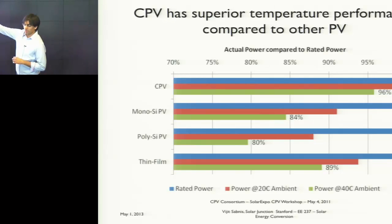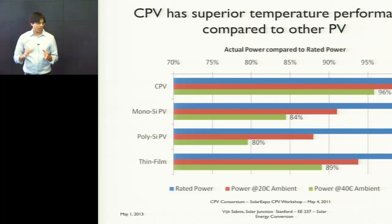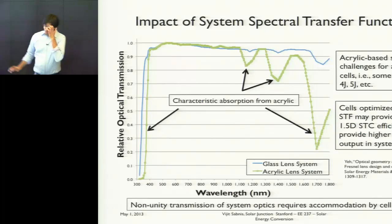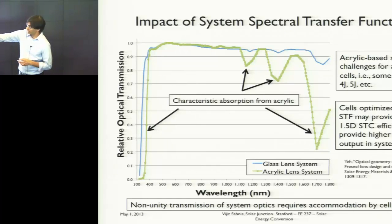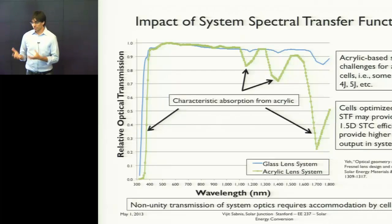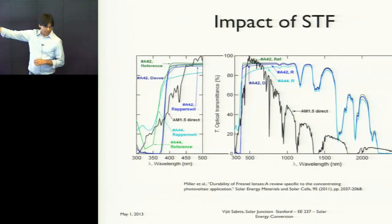If you look at CPV systems as a whole compared to other technologies, CPV degrades less with temperature compared to other PV technologies, which is important for annual energy yield and LCOE calculations. Regarding the optics, they typically attenuate light onto the solar cell. An acrylic lens and a glass lens system have different transmission in the UV and infrared, posing significant challenges in how you design your solar cell.